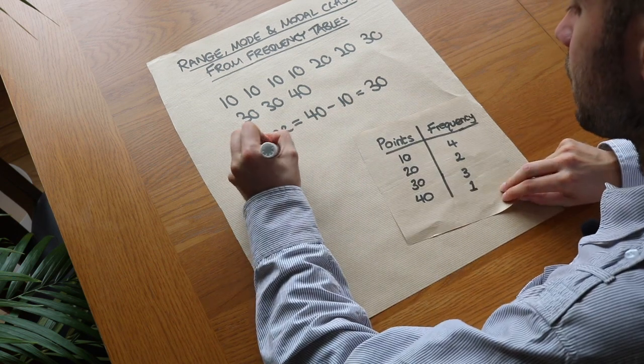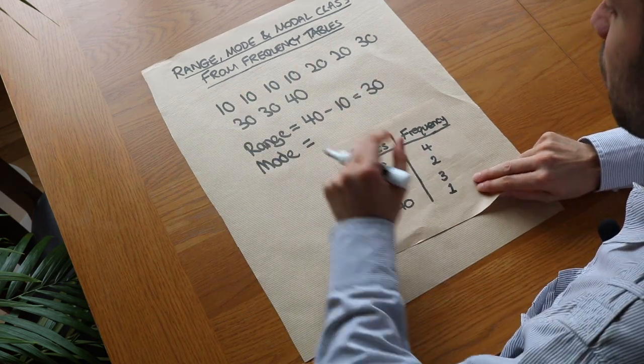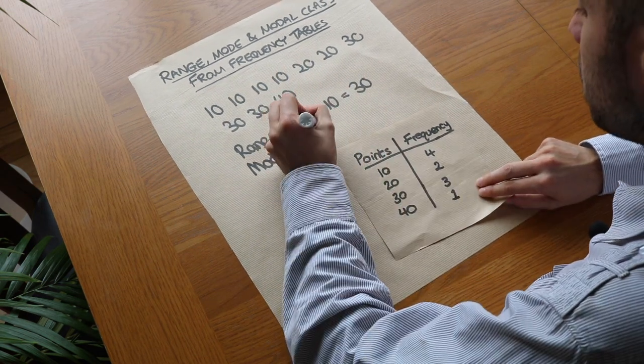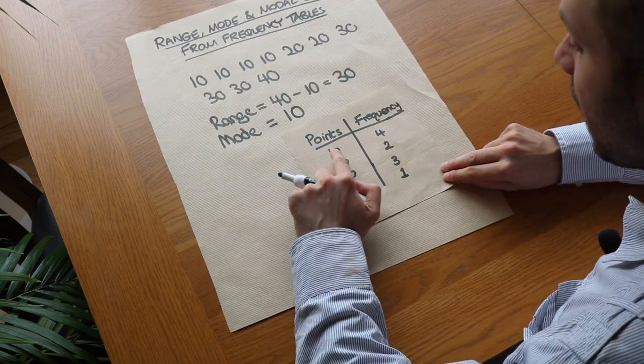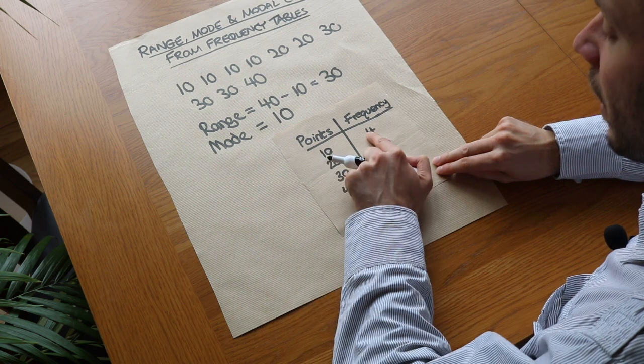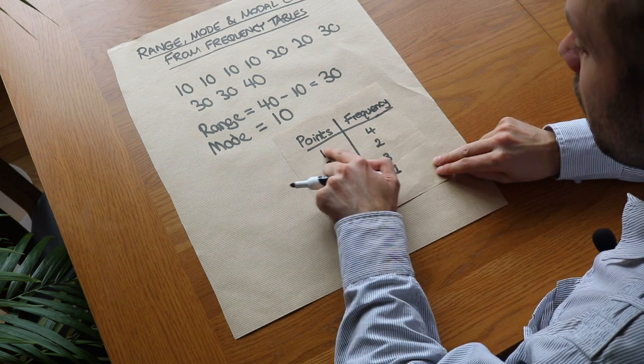And what about the mode? Well, the mode is the most common value, and from here we can see that 10 points is the most common value, so the mode will be 10. But again, we can avoid writing these out because we can see that 10 points had the highest frequency, so it occurred the greatest number of times, so we know therefore the mode is 10.